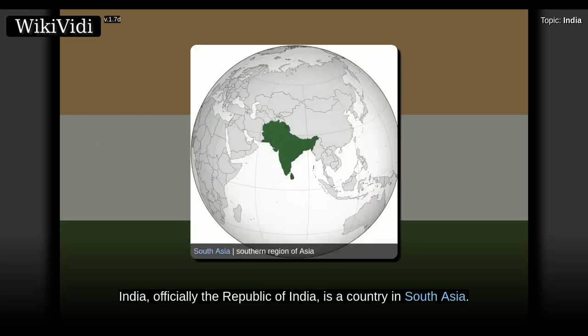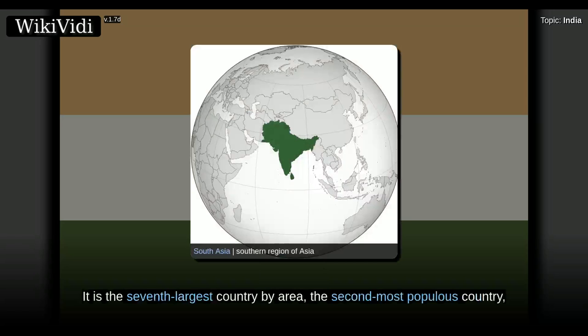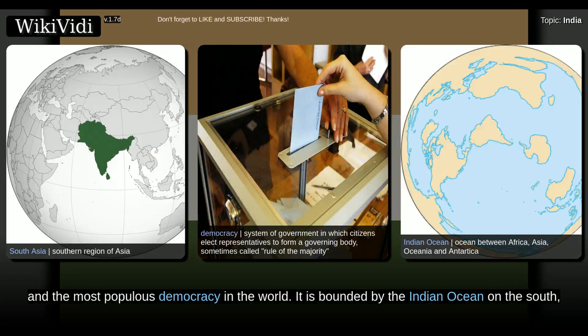India, officially the Republic of India, is a country in South Asia. It is the seventh largest country by area, the second most populous country, and the most populous democracy in the world.